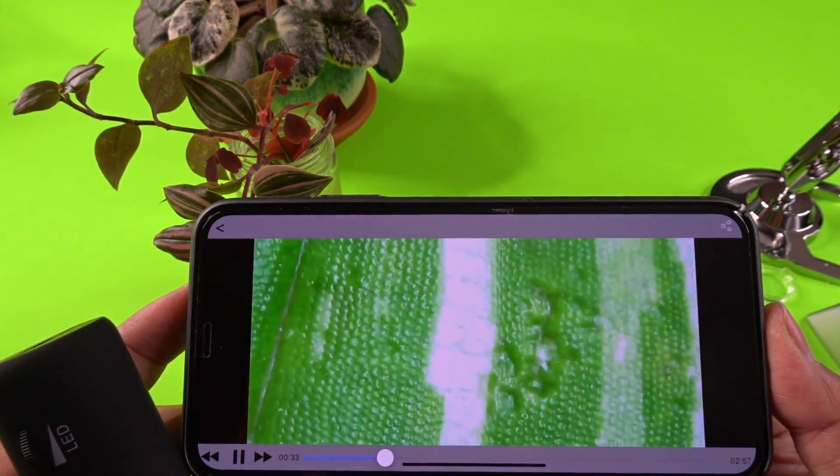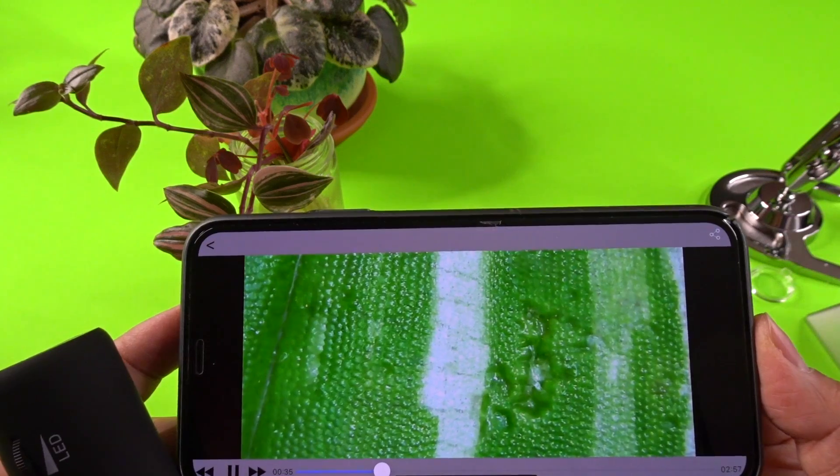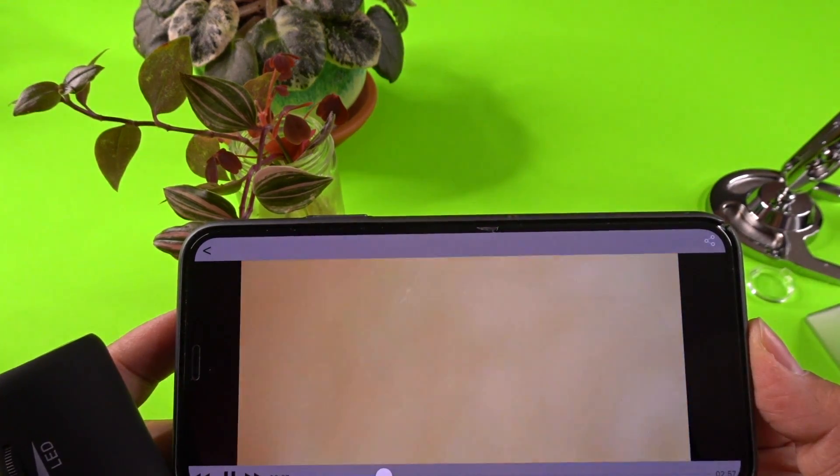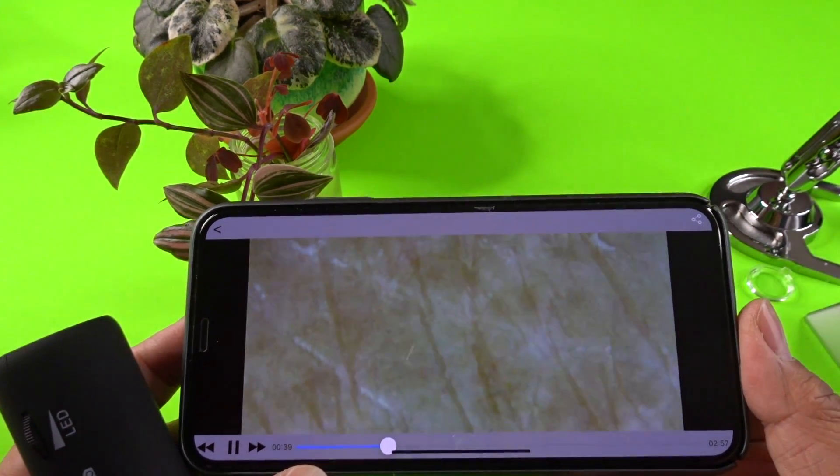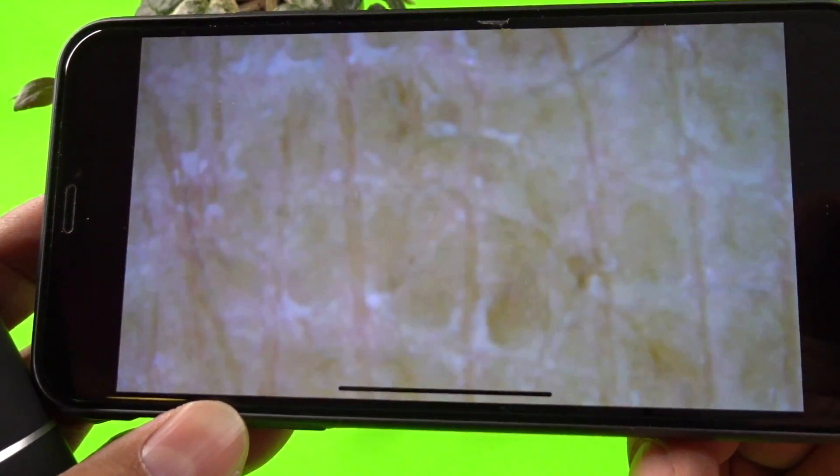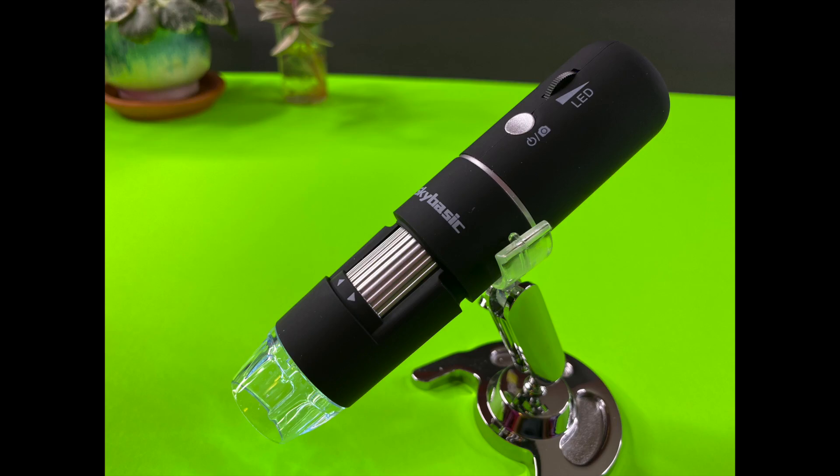Check out the SkyBasic wireless digital microscope guys. It's on Amazon. Sold by SkyBasic. $41.99 with a 25% off coupon right now. I think it's a great deal and the level of detail is mind-blowing. Look at that. I'll see you next time. Bye.